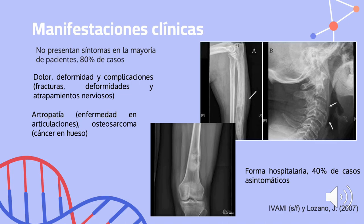En las manifestaciones clínicas tenemos que la mayoría de pacientes no presentan síntomas, un aproximado del 80%. Y en la forma hospitalaria, el 40% de los casos son asintomáticos. En los casos donde se presentan síntomas puede haber dolor en el hueso, deformidad y complicaciones como fracturas y atrapamientos nerviosos, que es cuando algún nervio es comprimido por alguna estructura anatómica, que en este caso puede ser por un hueso.